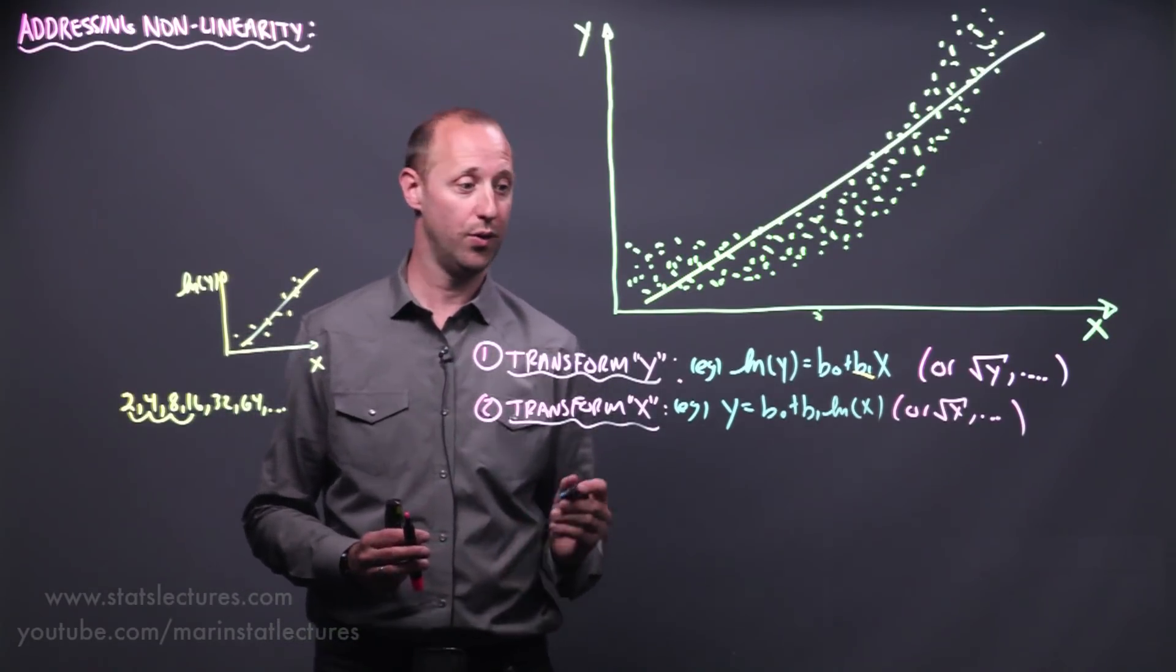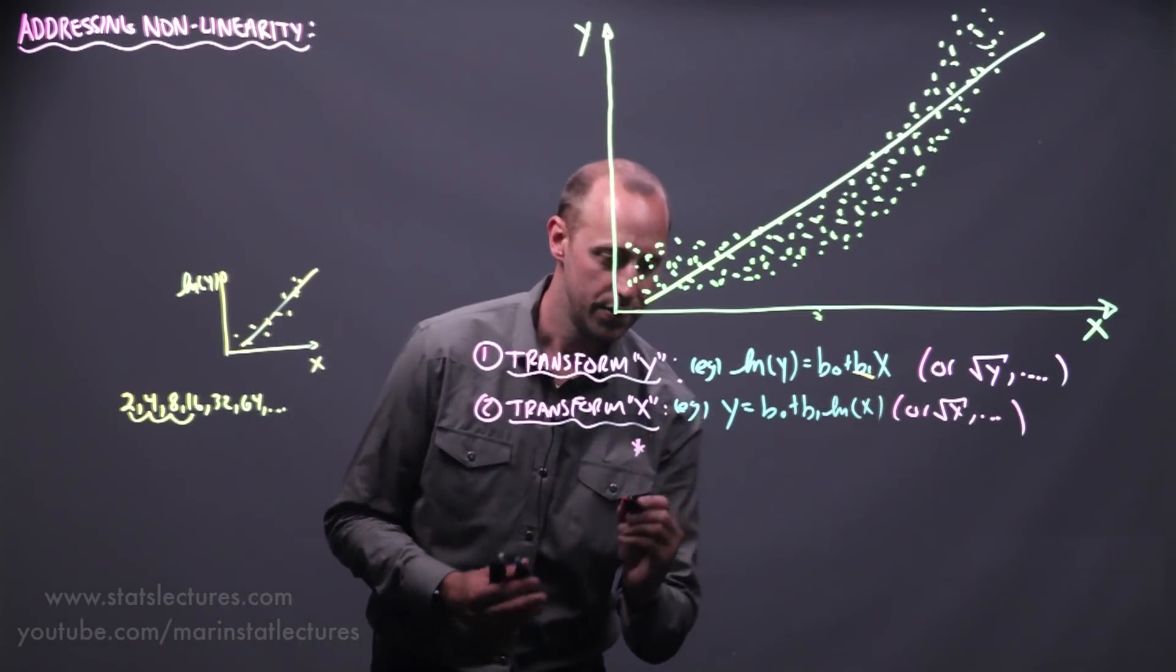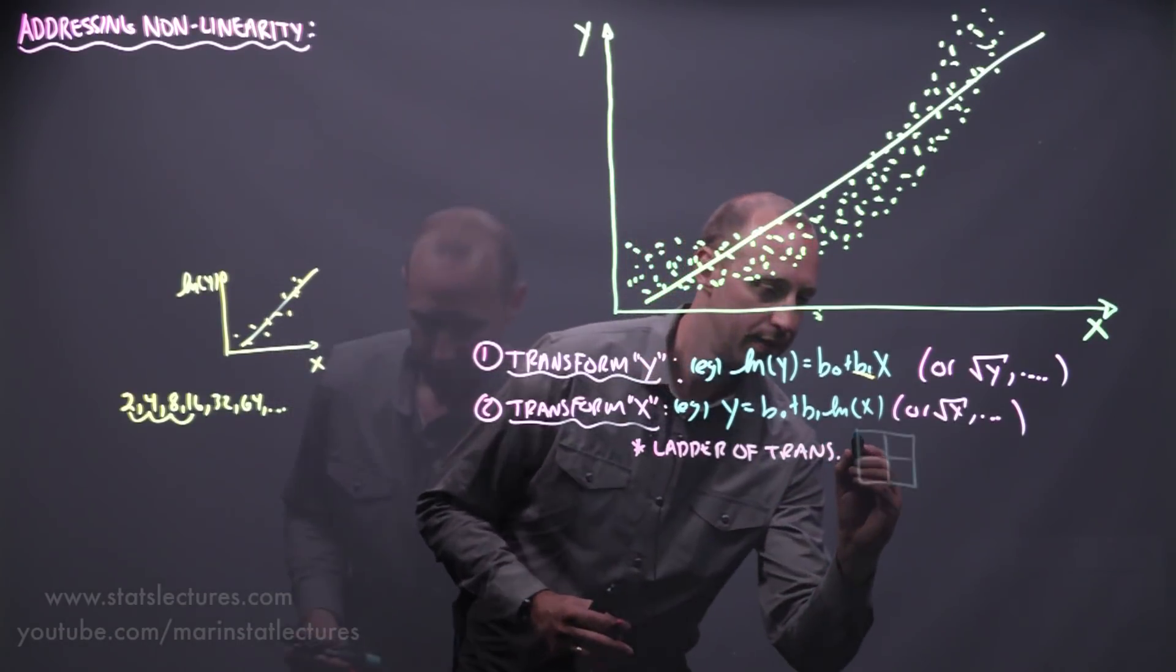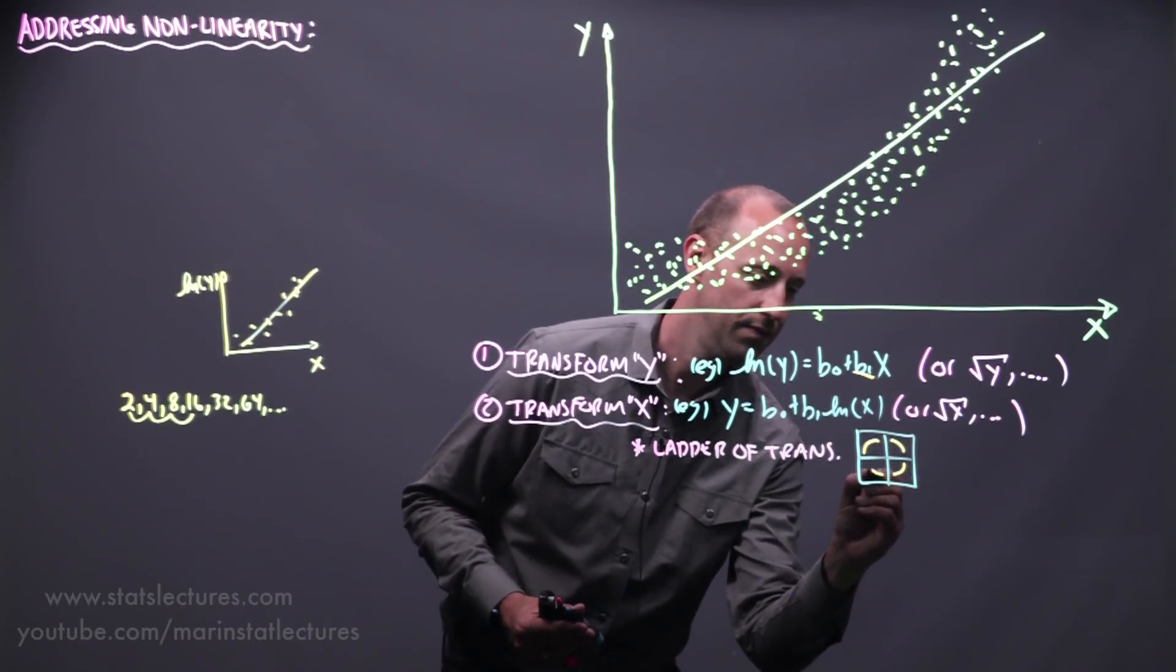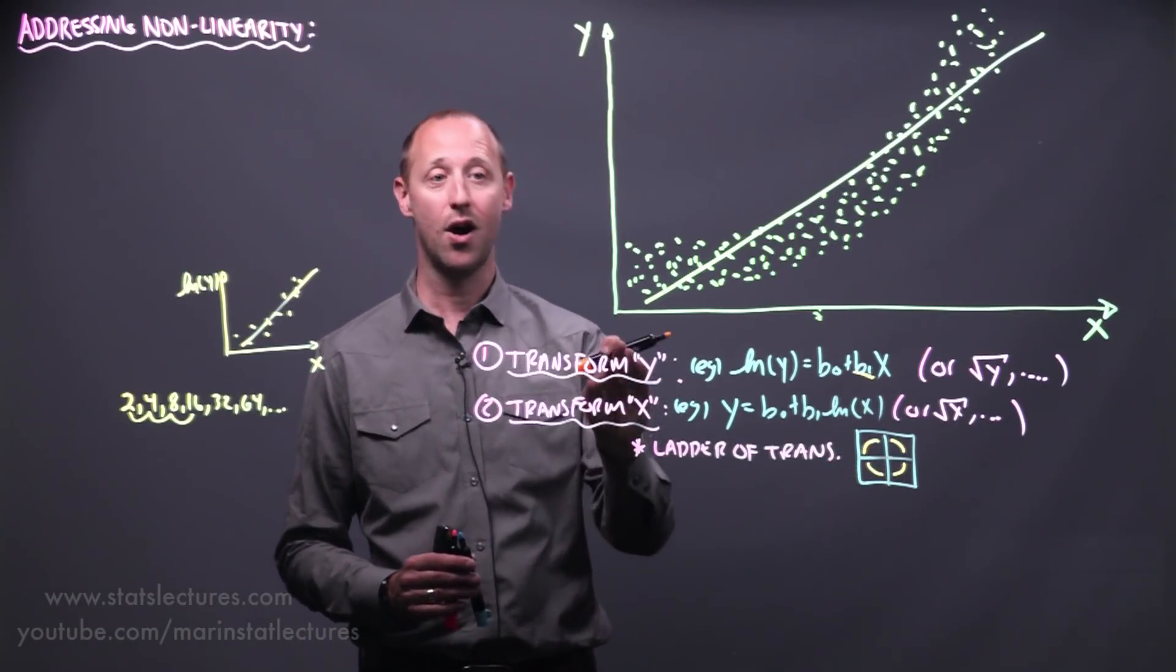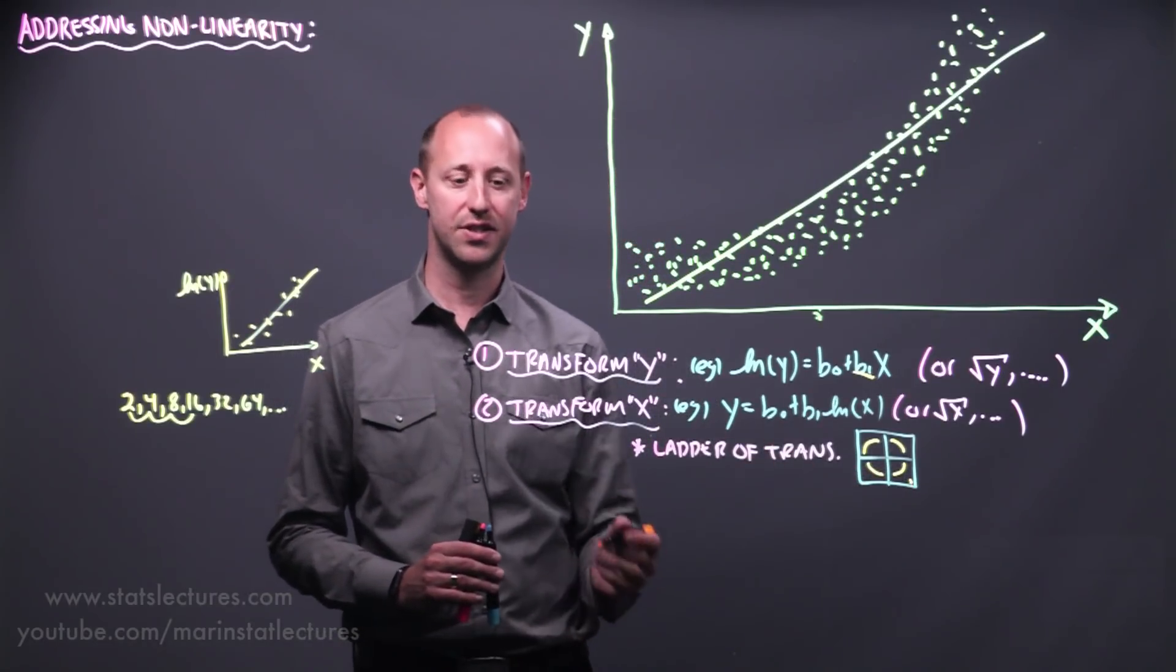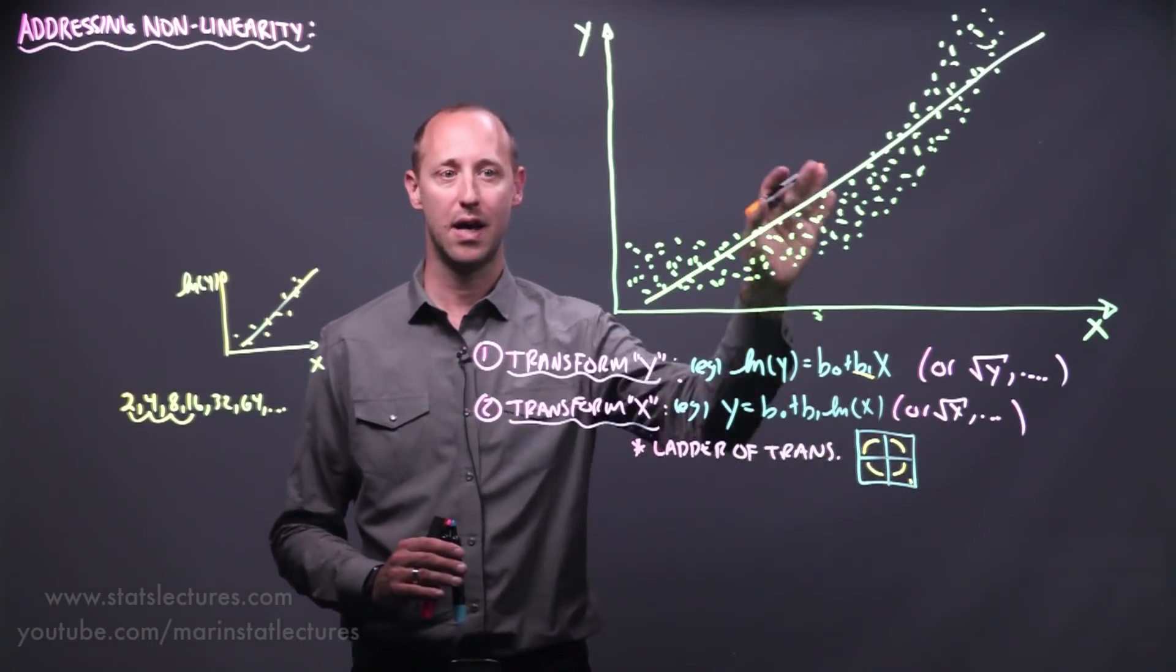One important thing worth noting is that relevant to transforming x or y, there's this idea of a ladder of transformations. And you can explore this on your own if you want. That essentially says if you have a non-linearity that looks sort of like this, like this, like this, or like this, it gives suggestions for each of those quadrants on transformations you can try on x or y that might help make the relationship look more linear. So for example, what we've got here is something that puts us in that quadrant, and the ladder of transformations will give us some suggestions to try and take a non-linearity that looks like that and make it look more linear.